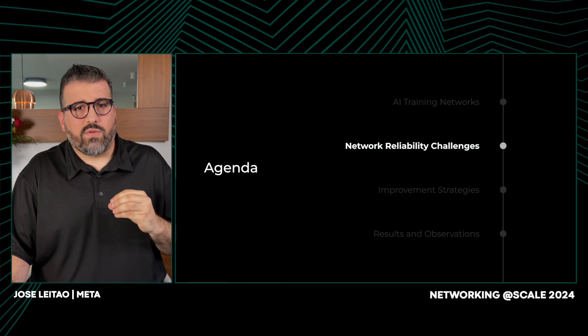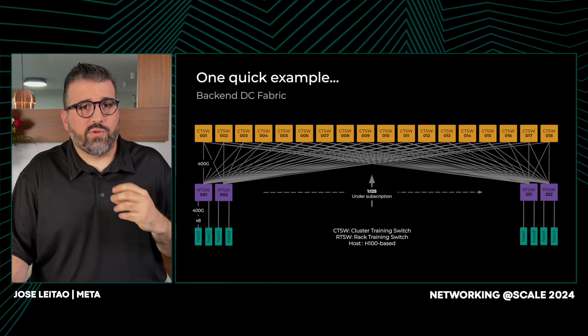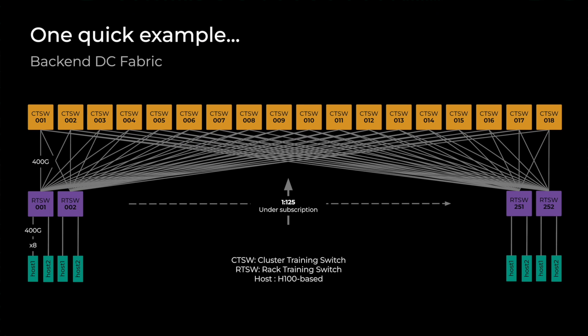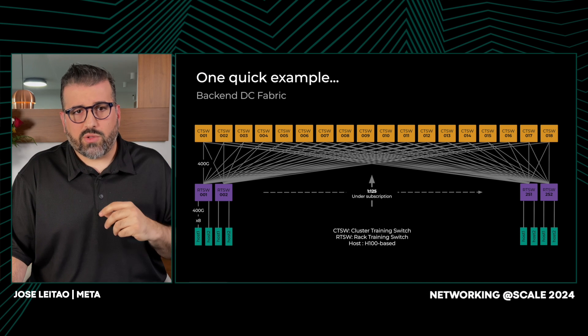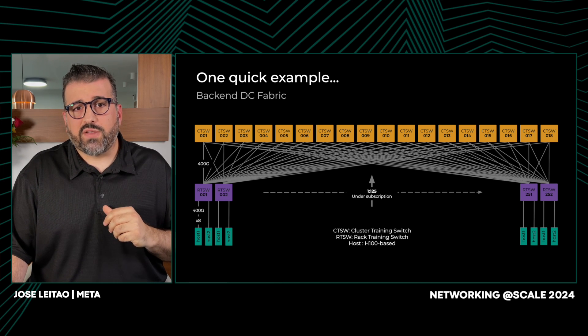Let's explore the unique challenges that we face in maintaining network reliability. To do this, it's useful to get a sense of our topologies. What we have here is our first-generation backend topology. The network hosts are connected to leaves, and the interconnectivity between those leaves is provided by a spine layer. The leaf switch, known as RTSW or rack training switch, resides within the AI rack alongside two supernodes and connects to 16 GPUs. On the uplink side, the RTSW is connected to 18 CTSWs. This topology enables the support of up to 252 AI racks, accumulating a total of 4,000 GPUs within a single AI zone.